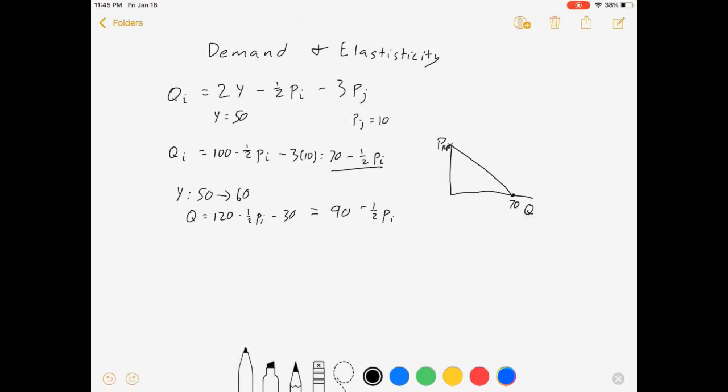Or what if instead, let's ignore that stuff for a minute. What if instead we change the price of good j? And it goes from 10 to 20. So that would make it go, qi is equal to 100 minus half pi minus 3 times 20. So minus 60, 40 minus half pi. In which case I go 40, and that would go 80.